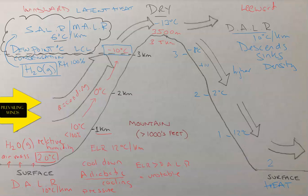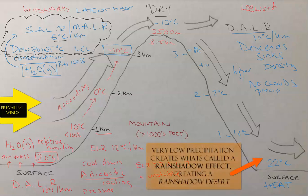The leeward surface is slightly warmer than the windward side at 22°C versus 20°C, but crucially, it's very dry descending air. Because air sinks on the leeward side, no clouds form, and you get no precipitation or very low precipitation. This produces a certain biome, landscape, and environment — desert conditions.